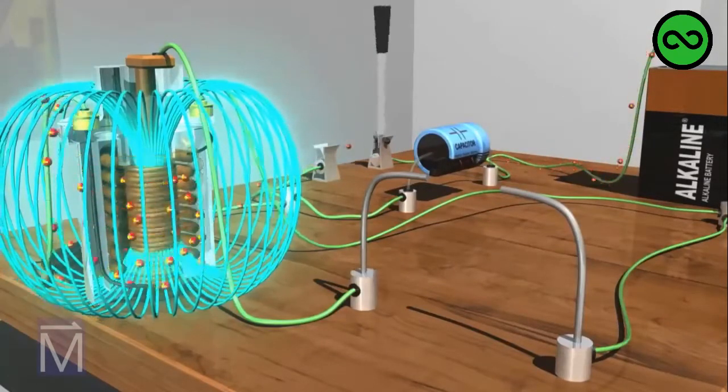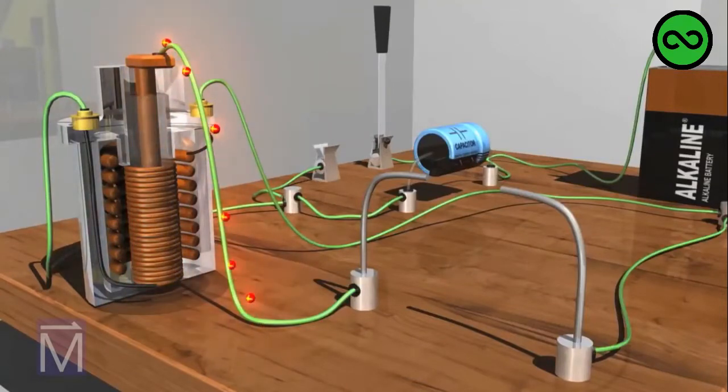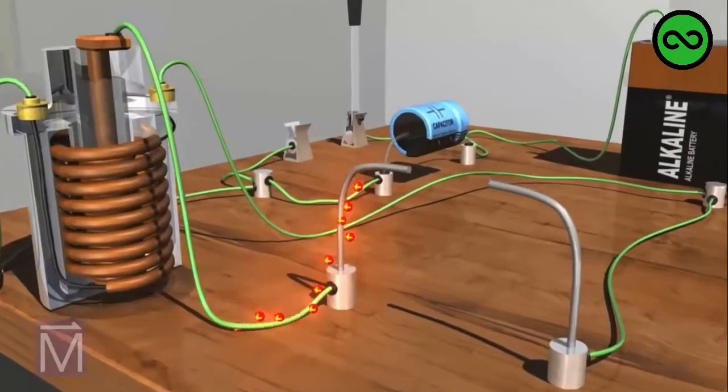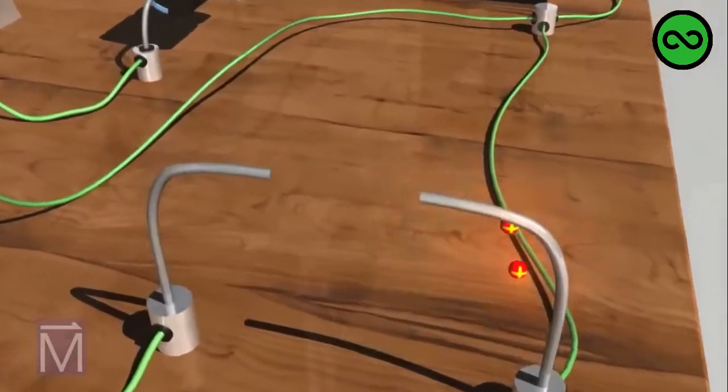If we open the knife switch to stop the current, the magnetic field suddenly collapses. Due to the principle of electromagnetic induction, this rapid change induces a surge of current in the secondary coil, which streams out and jumps the spark gap in the circuit.